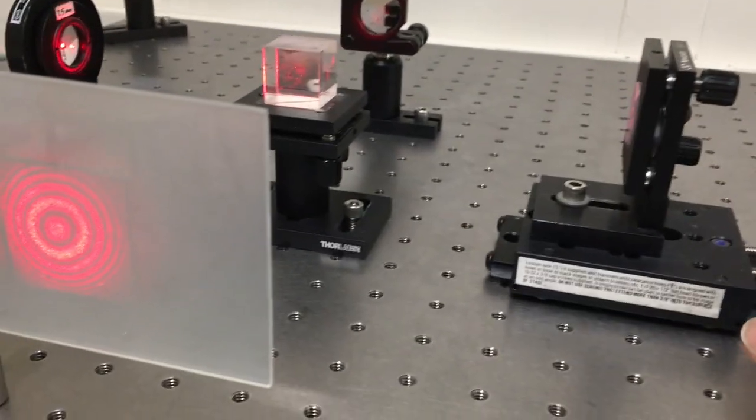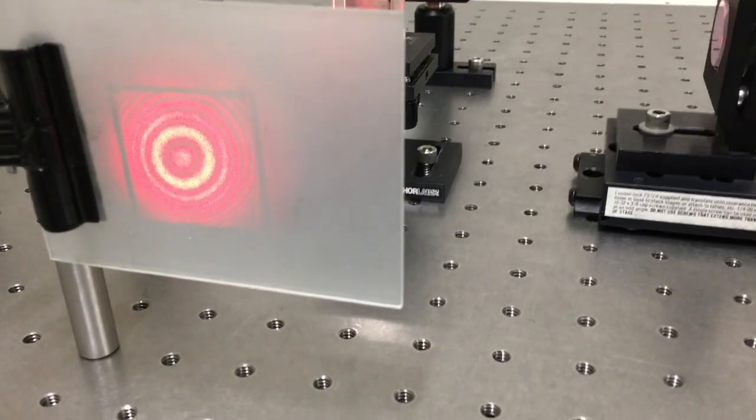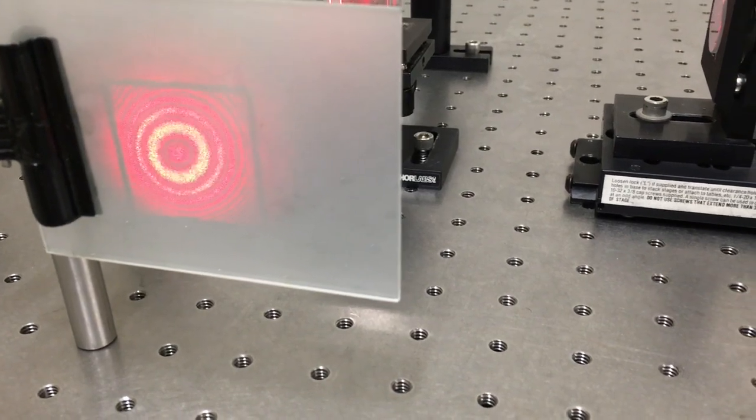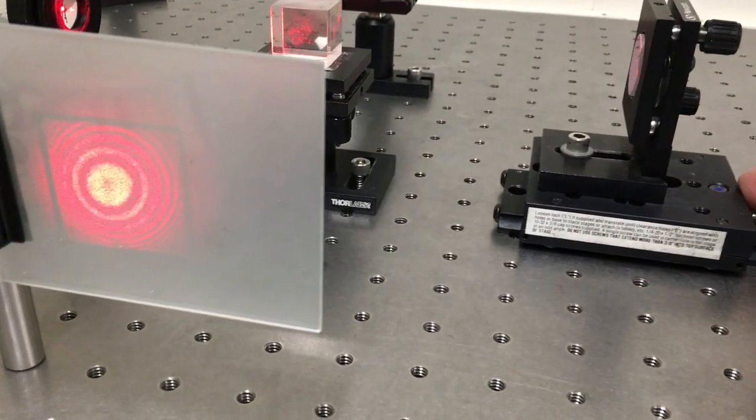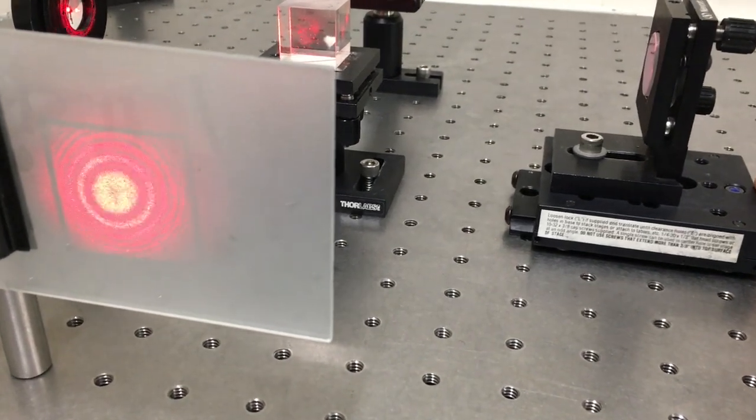Alright, so if I reach in here and push with my finger on the back of this mirror just a little bit, you can see the ring pattern contracts towards the middle as I exert pressure on that mirror. All the rings move inward.